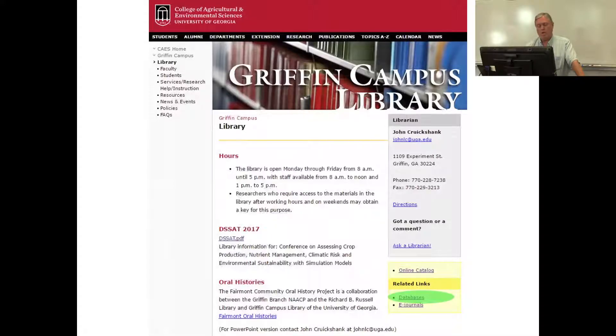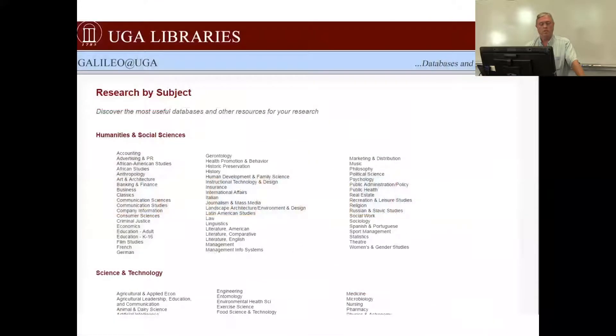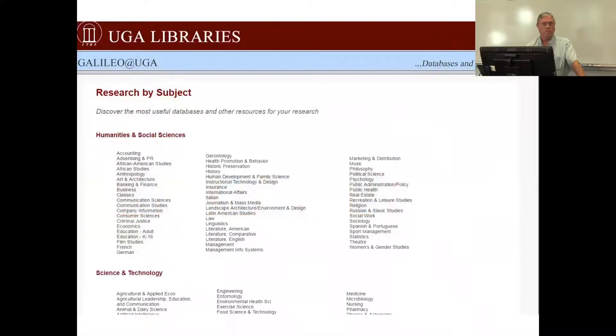Now if you click on the databases link it'll take you to this page. This is a webpage that all of our libraries on the Athens campus and everywhere else use. This is sort of the point of departure for using our electronic resources. So if you want to do a database search, usually the easiest way to go about this is just go to the research by subject tab, click on that button, and it'll give you a listing of all these different fields.